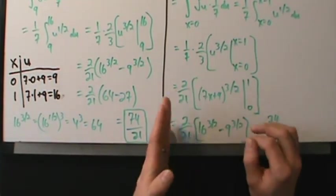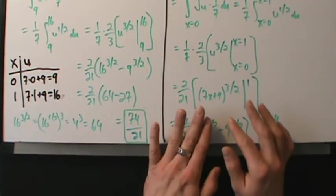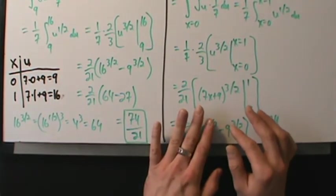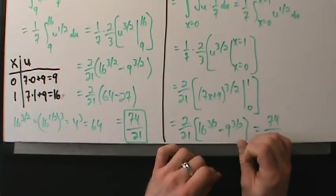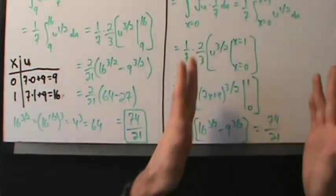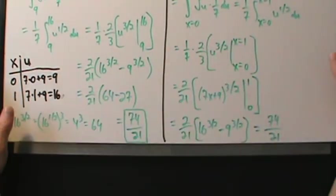You can still do it Method 2 way, but another problem with it is you have to write 'from x = 0 to x = 1' to specify that those limits are for x.